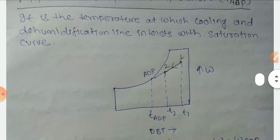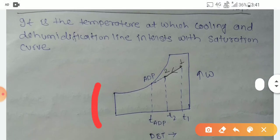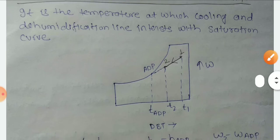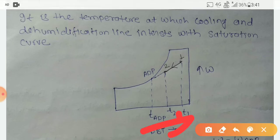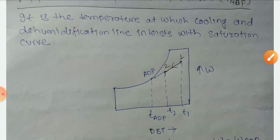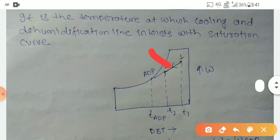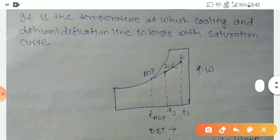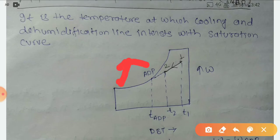So you can see here, this is a psychrometry chart. This line is a specific humidity line, and this line is DBT, that means dry bulb temperature line. And this is the saturation curve.